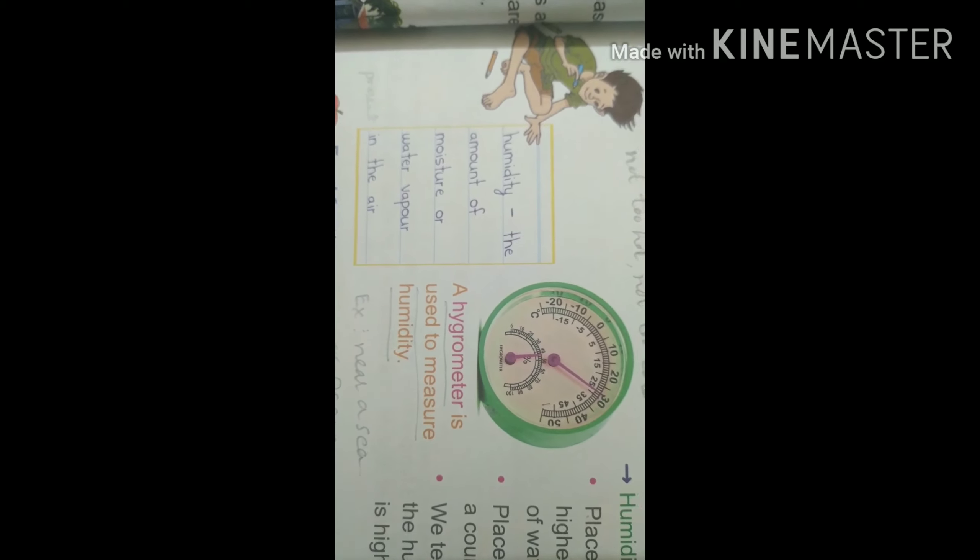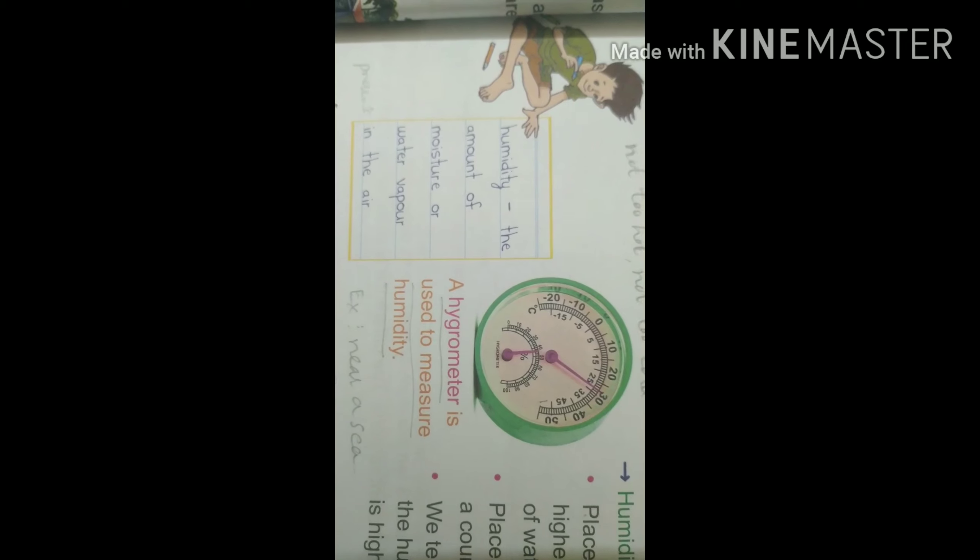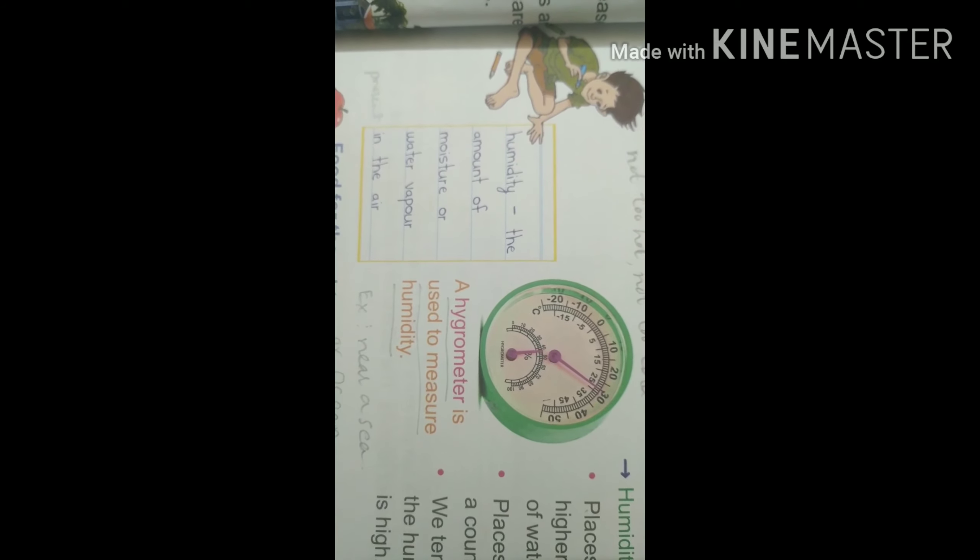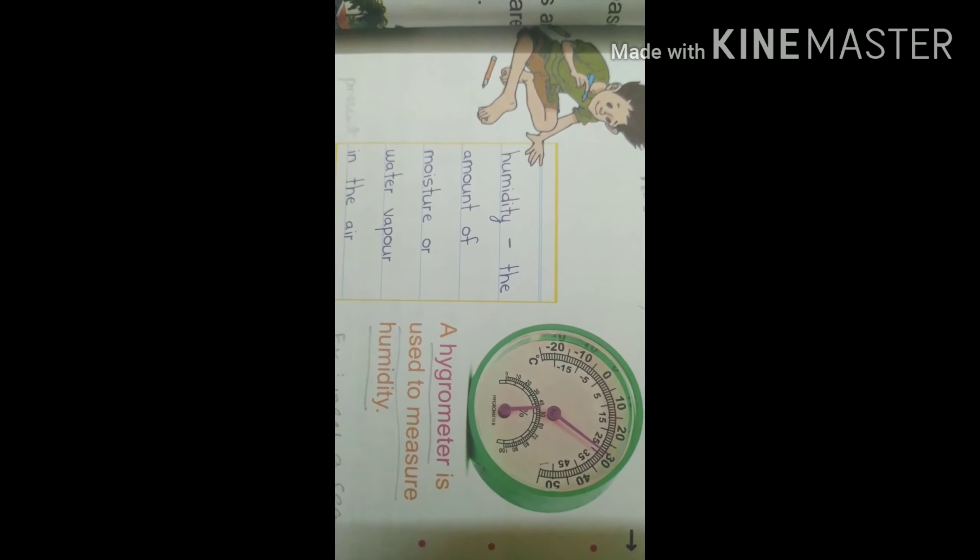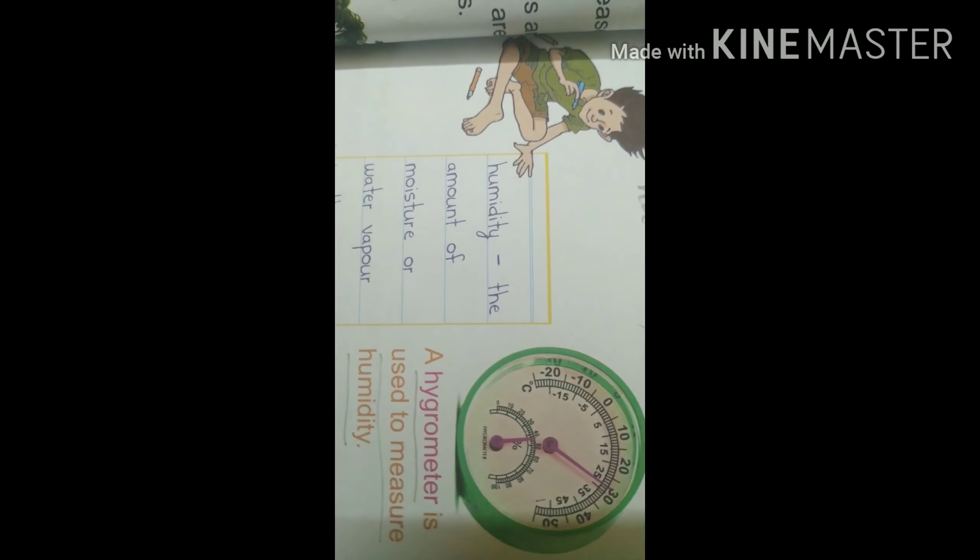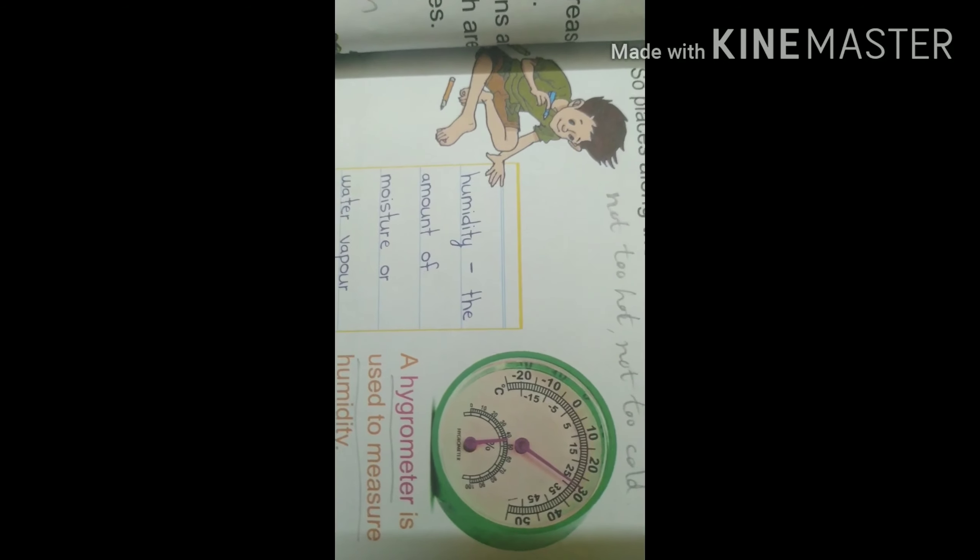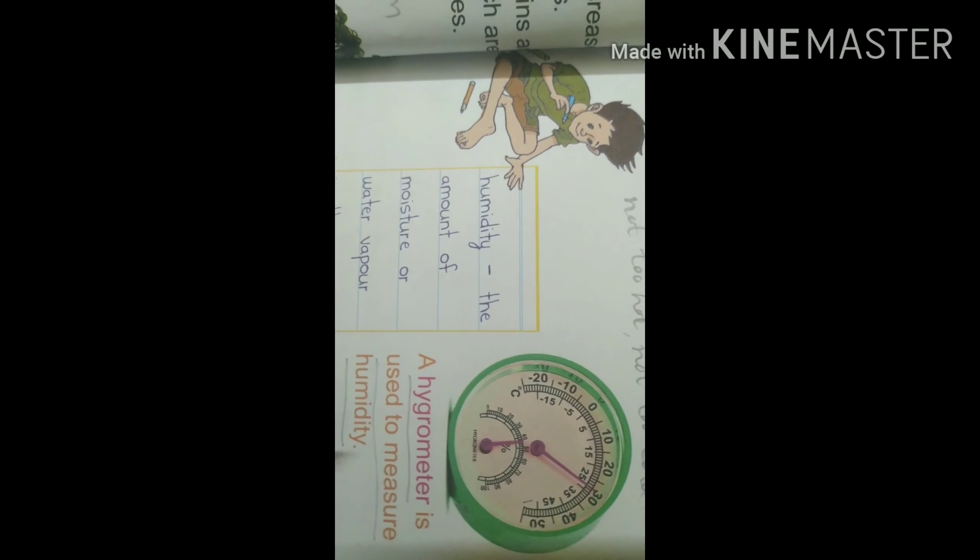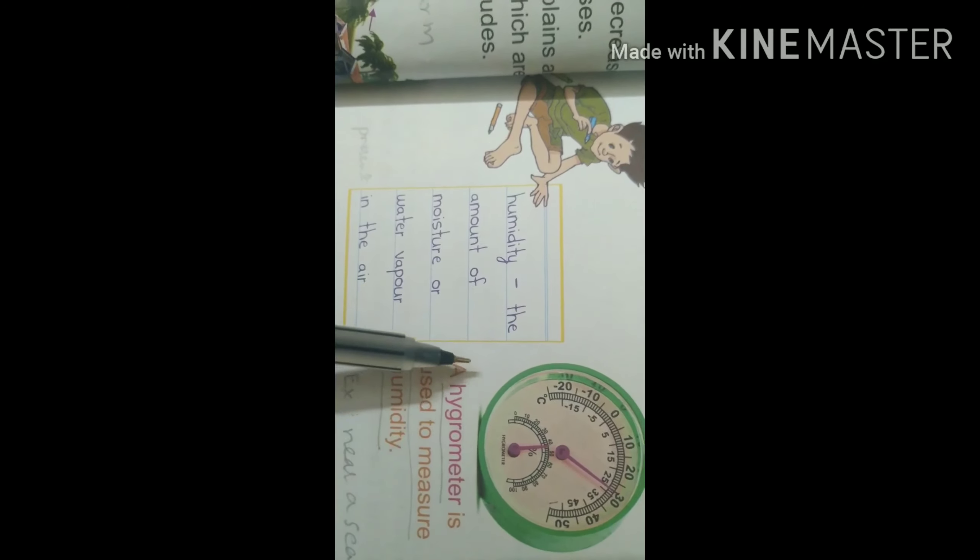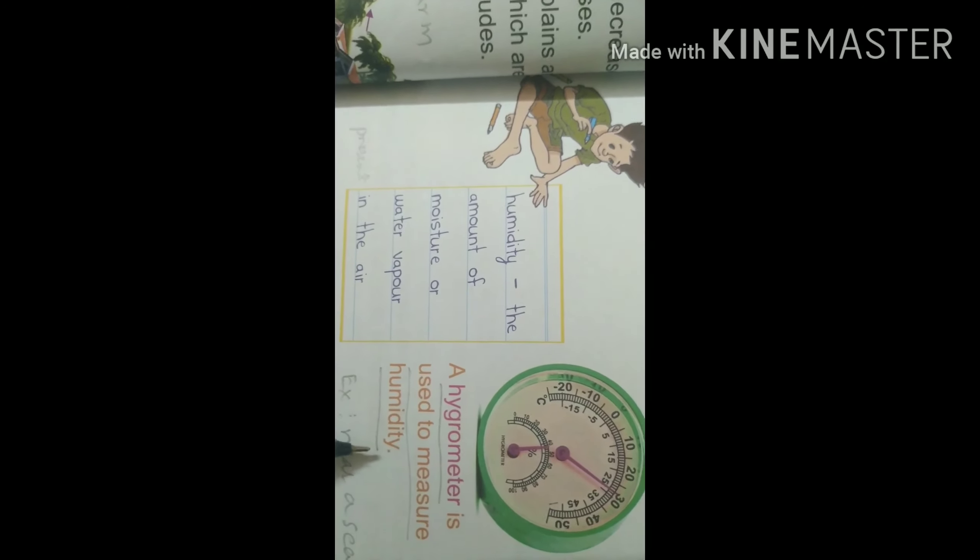Humidity. Humidity is the amount of moisture or water vapor present in the air. Places close to the sea have higher humidity as the volume of water that evaporates is huge. The places in the interior of the country are far less humid. We tend to perspire or sweat a lot when humidity is high. Here you can see a meter, this is called a hygrometer. Hygrometer is used to measure humidity.